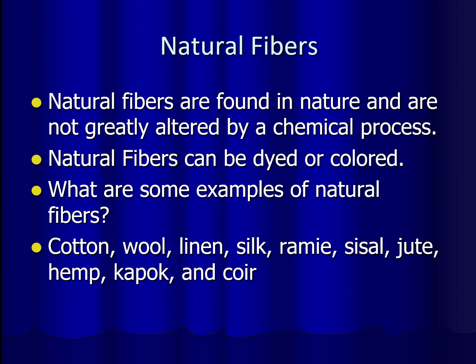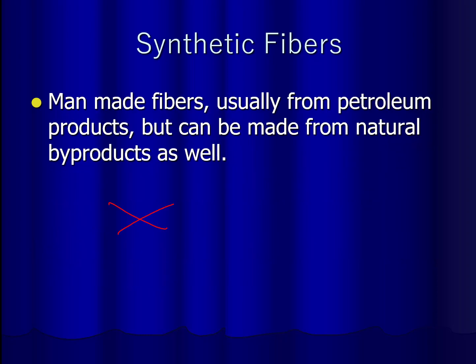Some of these are commonly used in clothing, like cotton, wool, linen, silk, and ramie. But sisal, jute, hemp, kapok, and coir are more commonly used in industrial products.